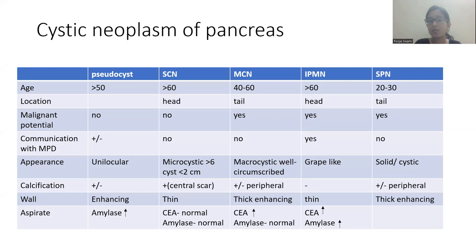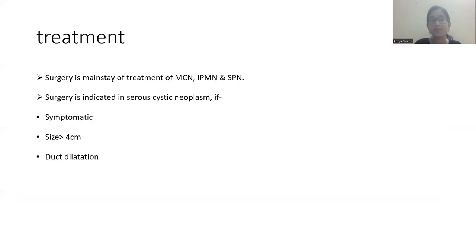Solid pseudopapillary neoplasm is seen in the 20–30 age group, usually in the tail region, and can convert to malignancy. It does not show communication with the main pancreatic duct. Appearance can be completely solid or solid-cystic, may show peripheral calcification, with a thick enhancing wall. Surgery is the mainstay of treatment for mucinous cystic neoplasm, IPMN, and solid pseudopapillary neoplasm. Surgery is indicated for serous cystic neoplasm if symptomatic or if the size is more than 4 cm with ductal dilatation.